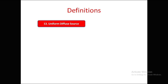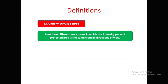The next definition is uniform diffuse source. A uniform diffuse source is one in which the intensity per unit projected area is the same from all directions of view.